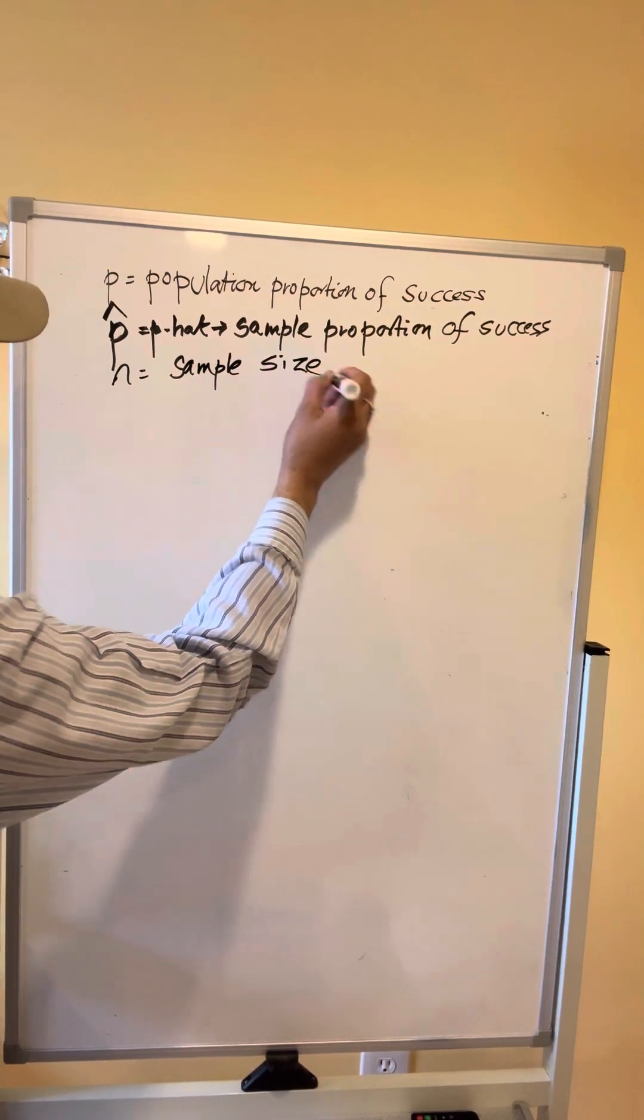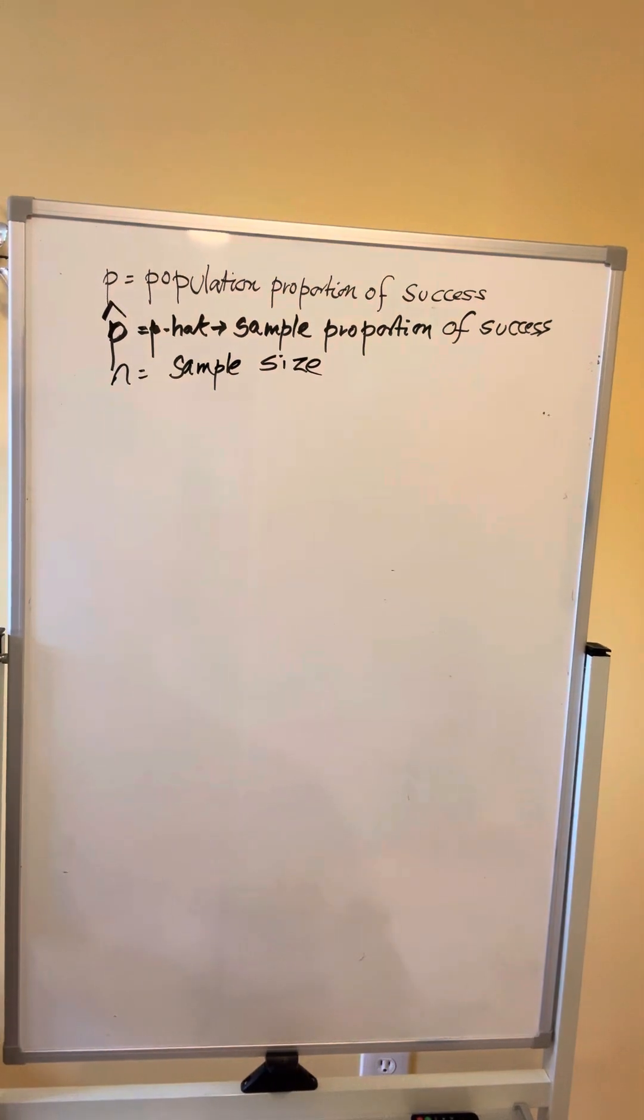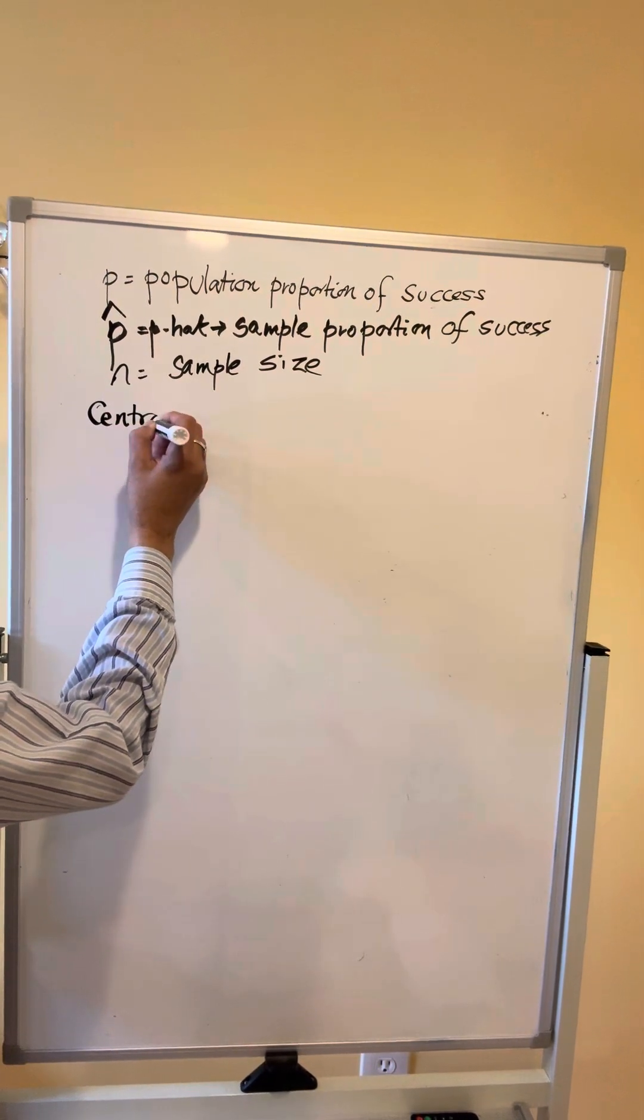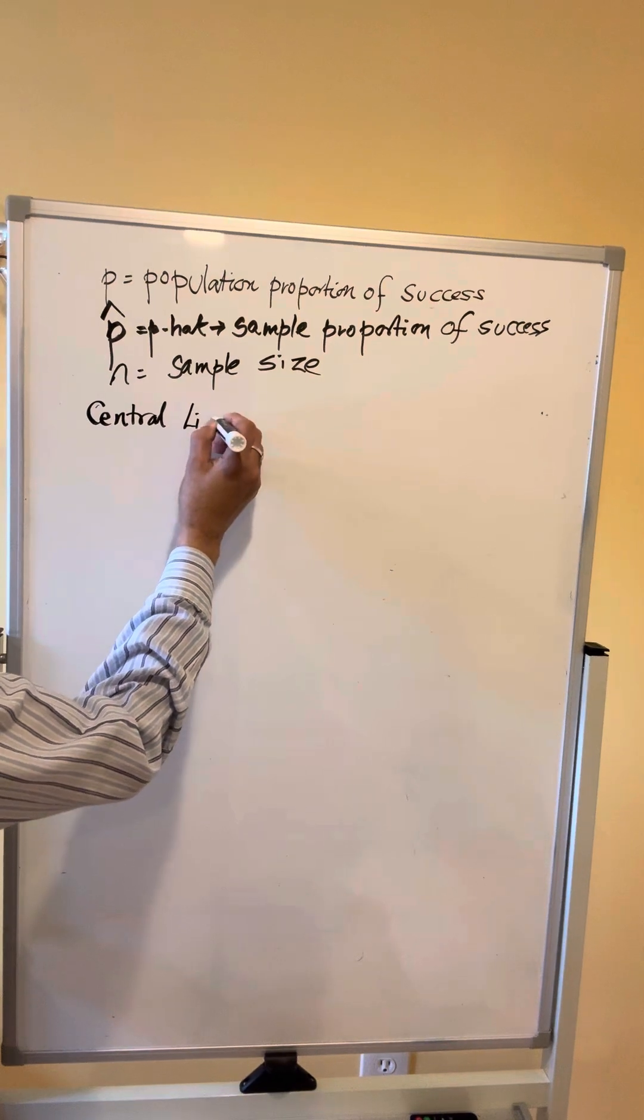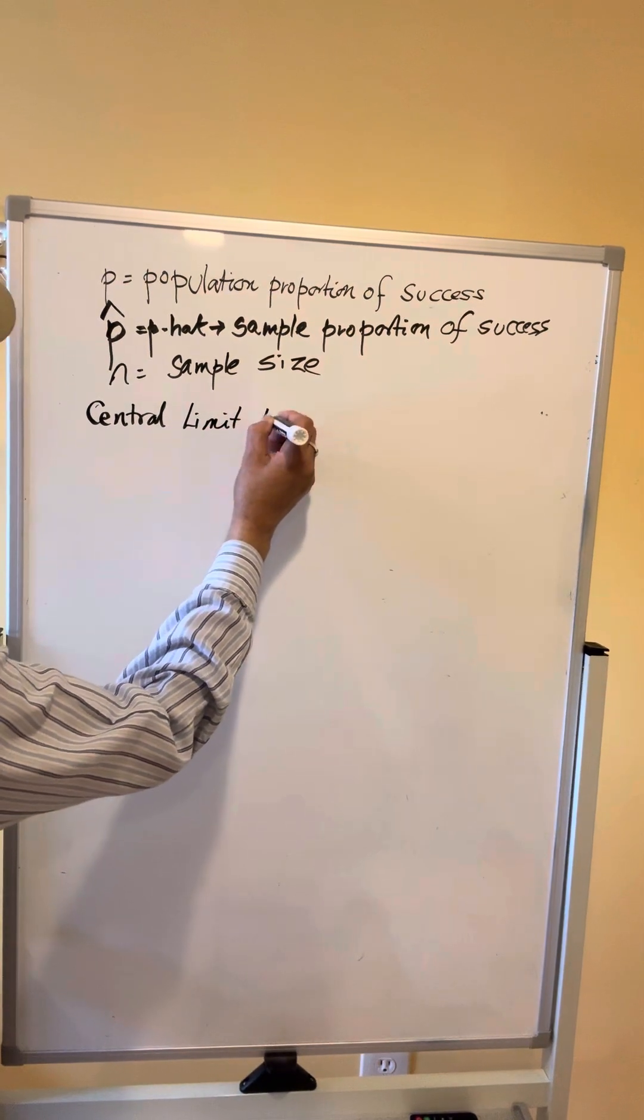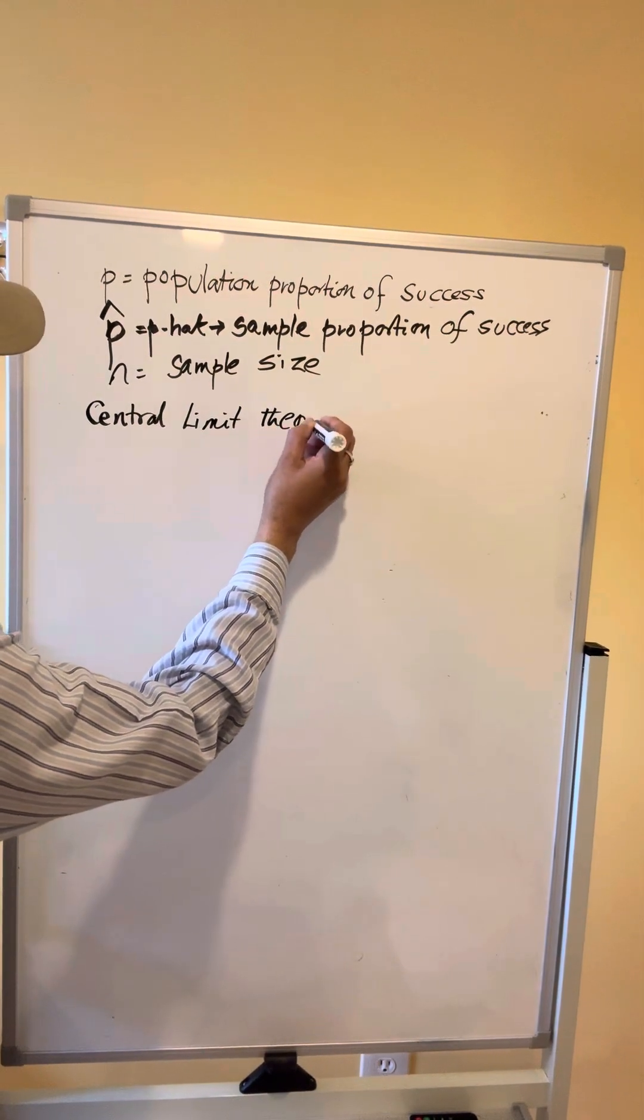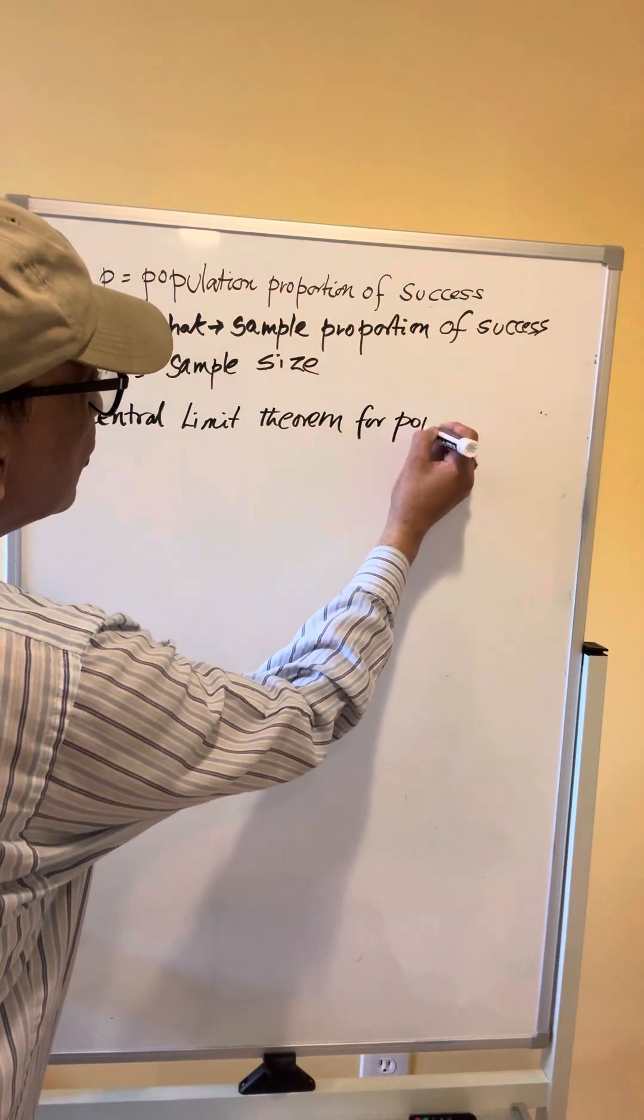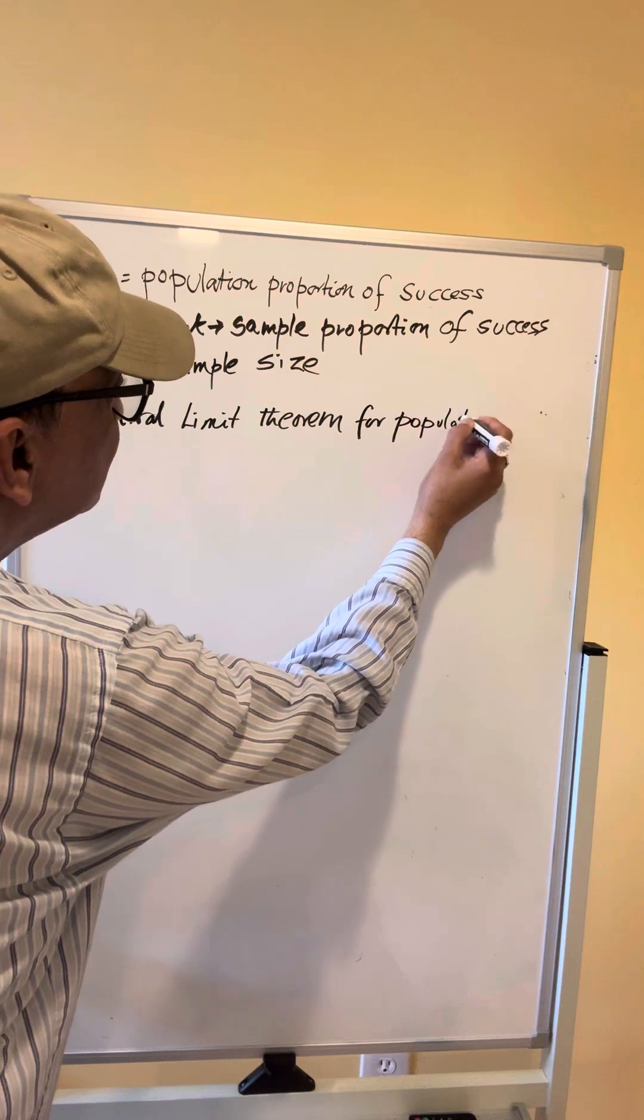Remember, the sample is a simple random sample. Then, the Central Limit Theorem states for population proportion P.